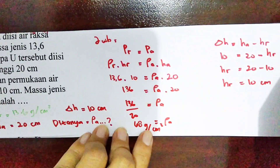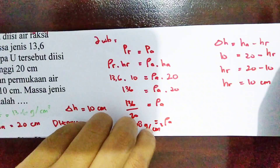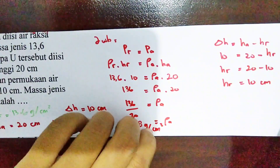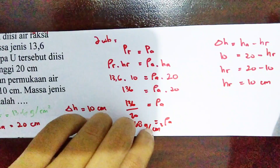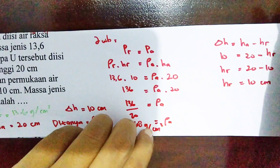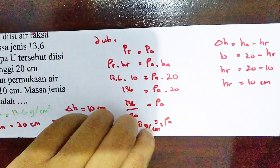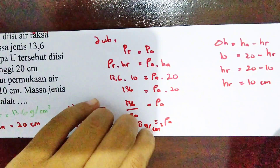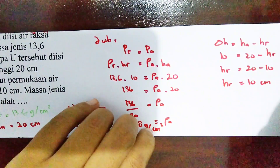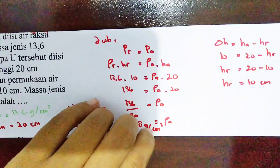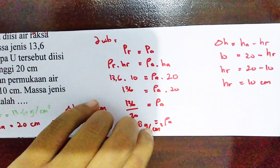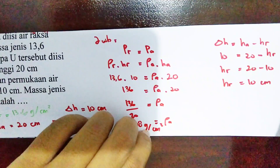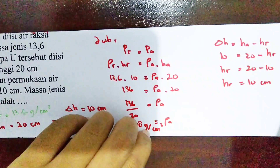Perbedaan di sini adalah ketika masing-masing cairan mempunyai tinggi yang berbeda, tinggal kita masukkan saja. Tetapi jika yang diketahui adalah selisih atau perbedaan tinggi cairan, maka ketinggian yang besar kita kurangi dengan ketinggian yang kecil untuk mendapatkan tinggi masing-masing cairan. Saya kira cukup, semoga bermanfaat. Assalamualaikum warahmatullahi wabarakatuh, terima kasih.